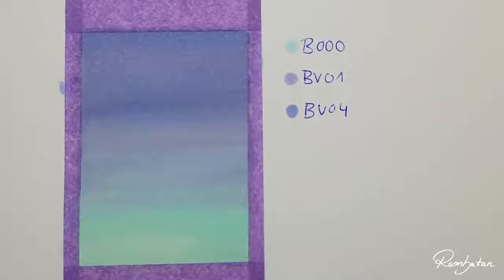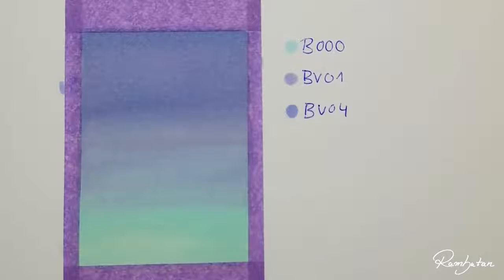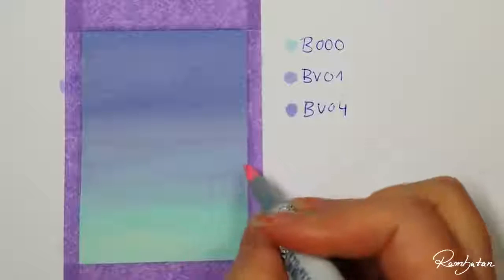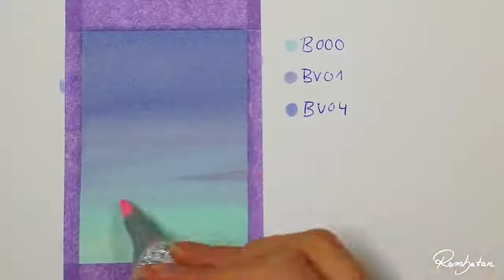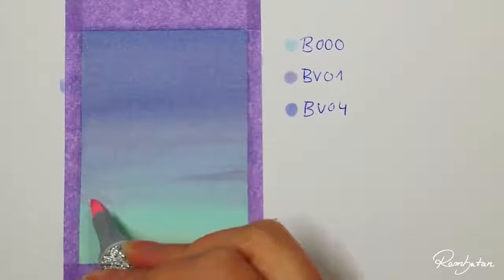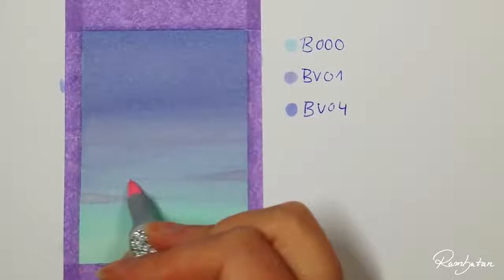It's important for the next step that the colors are dry because now we want to paint another element without blending it into the background so the edges will look more clear. For the fog I'm using RV00 water lily which is only available as a Copic sketch marker.